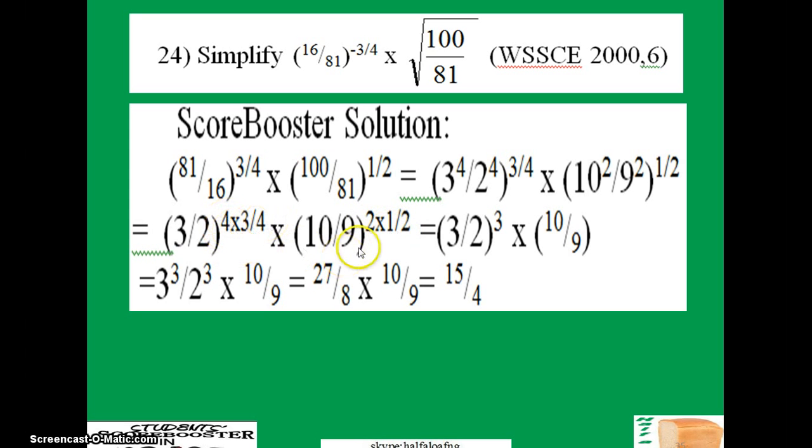So this 4 cancels 4, 2 cancels 2, and you have three-halves raised to power 3, then 10 over 9. What do we do? We can open all the brackets to have the whole thing in this form.